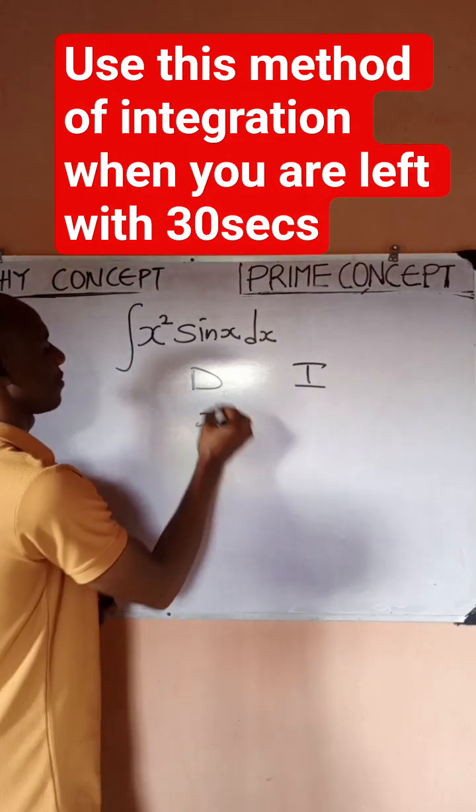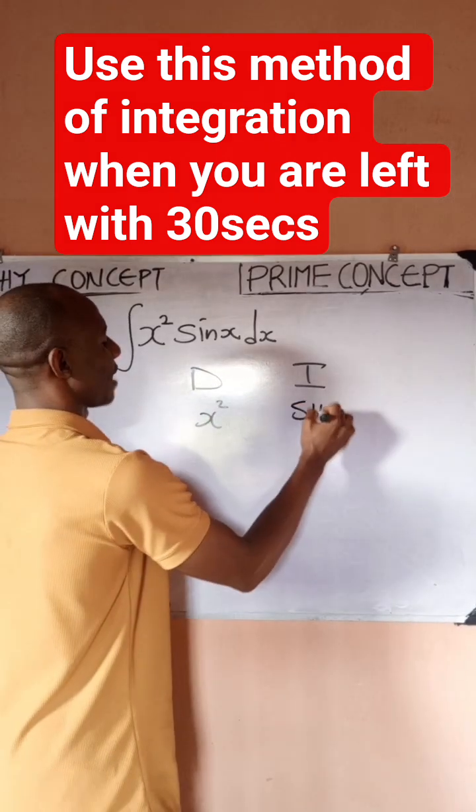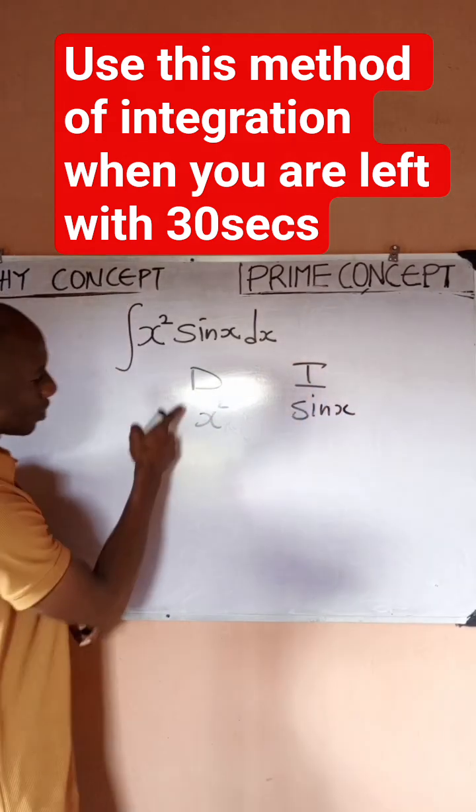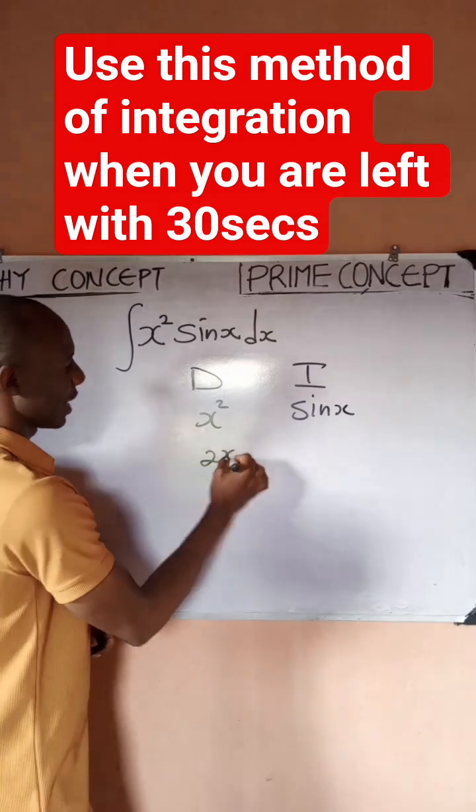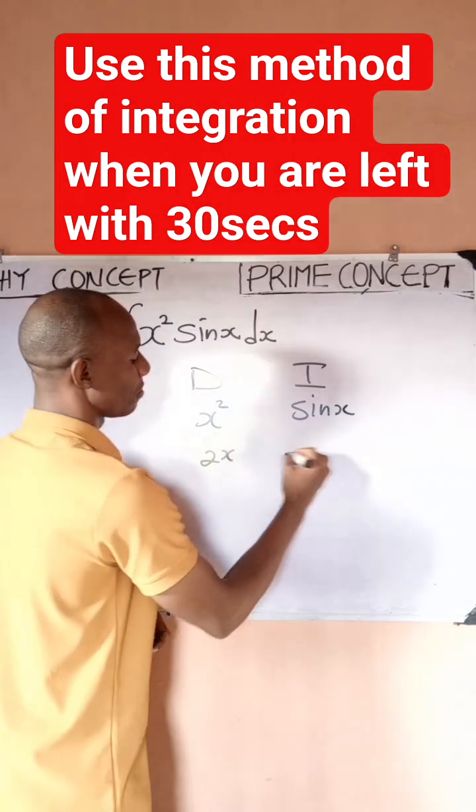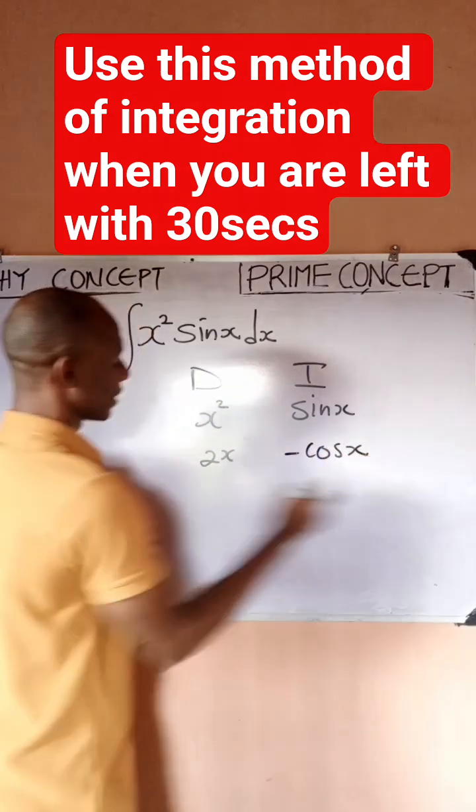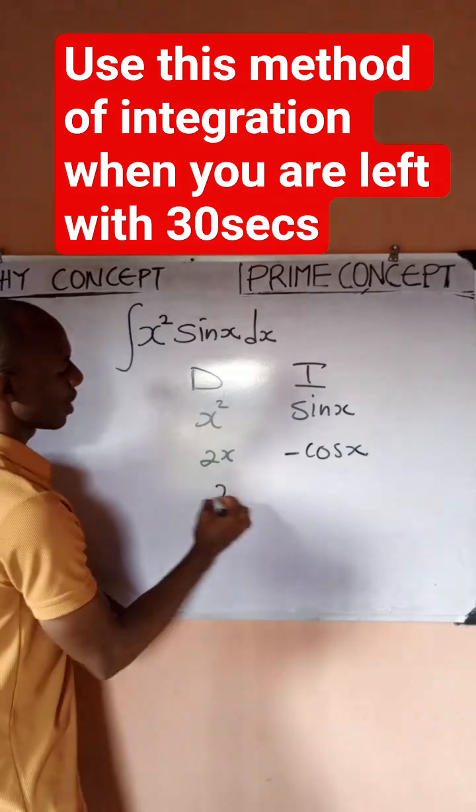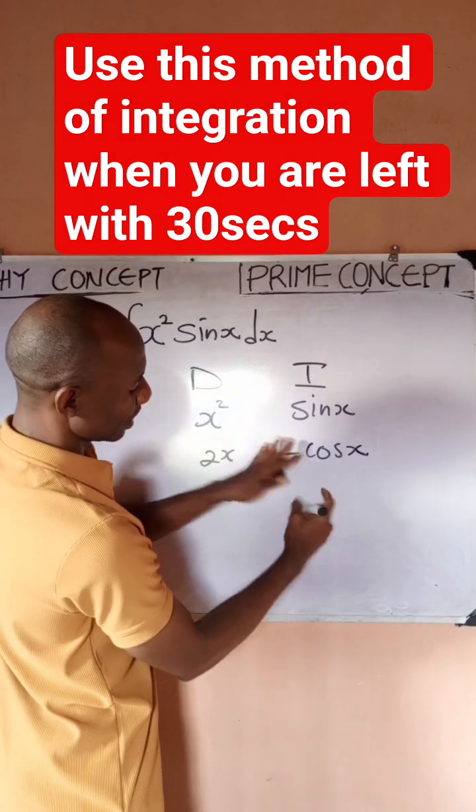I have D, I have I. D means differentiate, I means integrate. So I'm bringing the polynomial under the D, so I have x squared. Then under I, I have sine x. So I differentiate, this gives me 2x. I integrate sine, you have minus cos x.